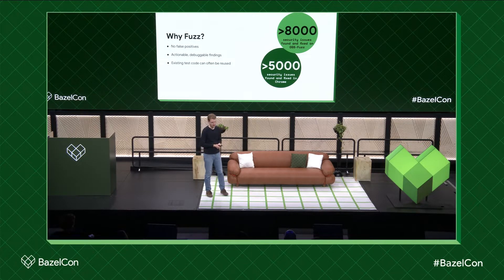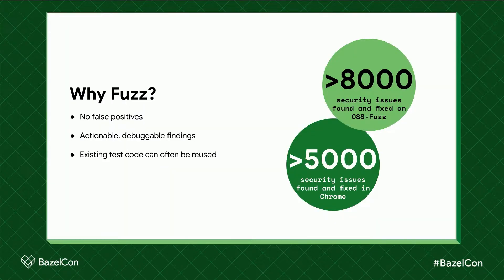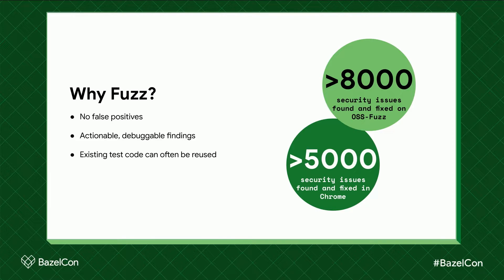I should highlight some numbers. The biggest user of fuzzing today is Google. They use it internally to secure Chrome, where fuzzing has found over 5,000 security issues that have since been fixed. Google also launched an open source fuzzing platform called OSS-Fuzz for open source libraries, with around 400 projects including important ones like curl, JPEG parsers, and compression tools. OSS-Fuzz has found about 8,000 security issues that have been fixed, indicating that these are real issues in these code bases.